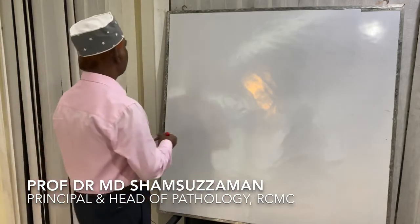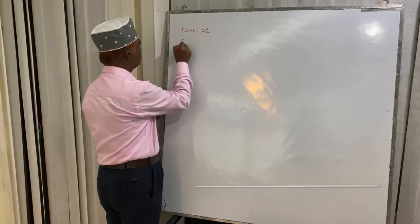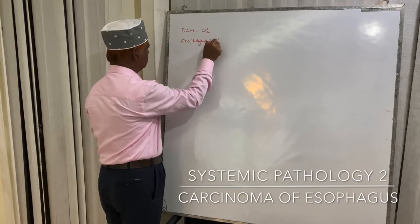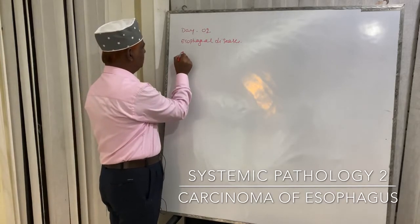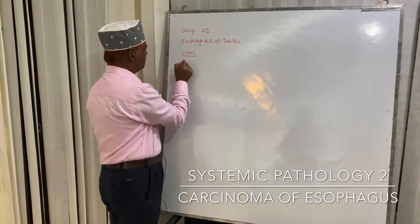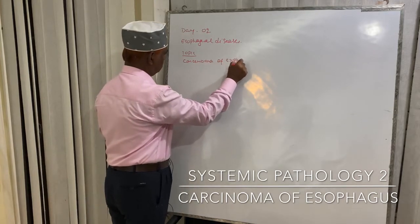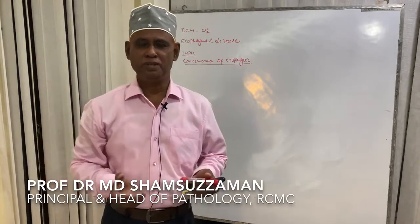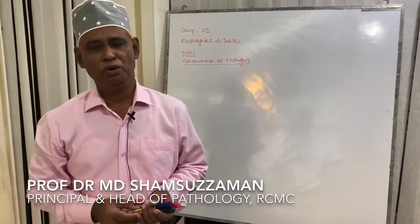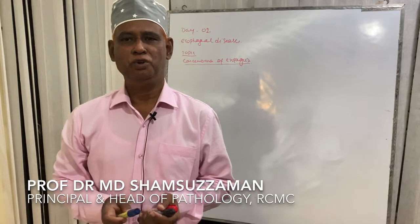Today's topic is Carcinoma of Esophagus. We are going to discuss about the Carcinoma of Esophagus. We have to know what are the different tumors that may occur in the esophagus. Now let us come to tumors of esophagus.